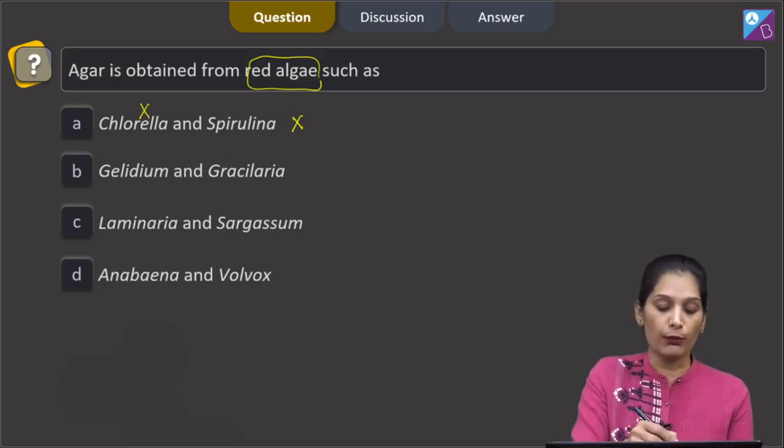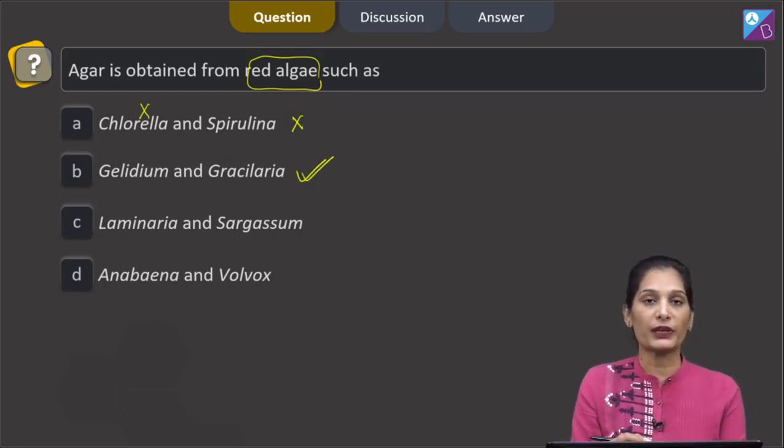Geladium and gracilidia, both are red algae. So agar can be obtained from gracilidia and geladium.